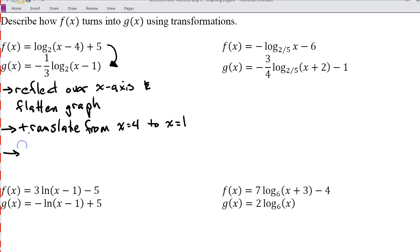And then the last thing, I have this plus five here. So the original graph was shifted up five. Now since it's plus zero essentially, the graph has been moved down five. Okay, so that's how we're going from f(x) to g(x). Keep in mind that to get to f(x) we took our parent function and moved it to the right four and moved it up five. And then to get to g(x) we did these three things here.